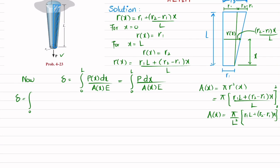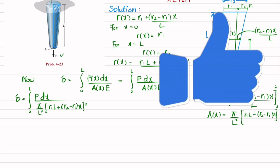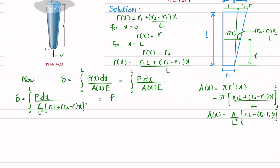Substituting A(x) into the deformation integral, the deflection equals the integral from 0 to L of P dx divided by {pi over L squared times [R1·L + (R2 − R1)·x] squared} times E. Taking P, pi, L squared, and E outside the integral, we are left with the integral of dx divided by [R1·L + (R2 − R1)·x] squared.